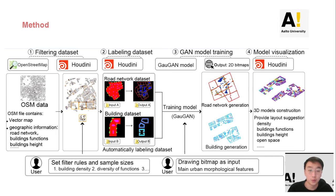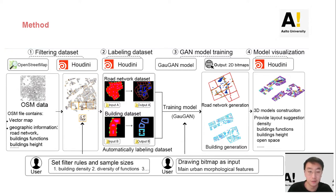In the master framework, the first part is the sample collector, which can automatically collect samples from OSM. The second part is the feature labeling for the dataset. These samples are then automatically labeled with features for GAN. Third, we train two GAN models for the road layout and the building layout. Finally, we convert these features into 3D volume and function predictions.